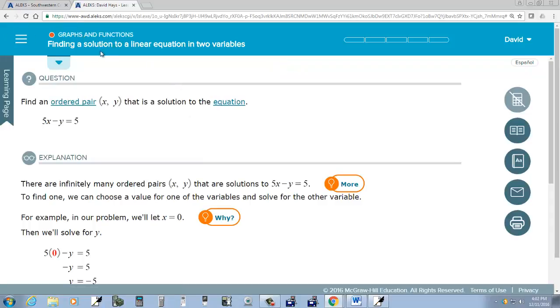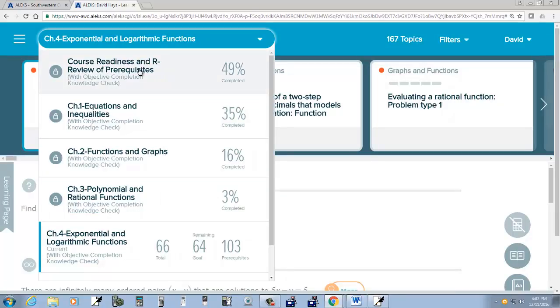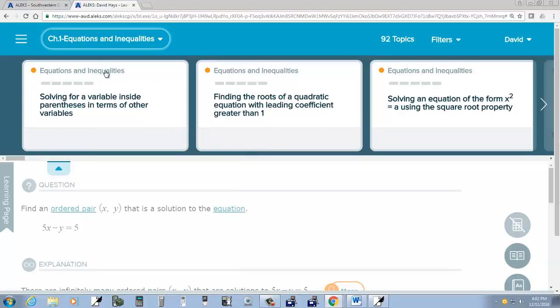And you see it says graphs and functions. If I do the drop down here, then you've got chapter 4. If I go back to chapter 1, equations and inequalities, then you see it says equations and inequalities.